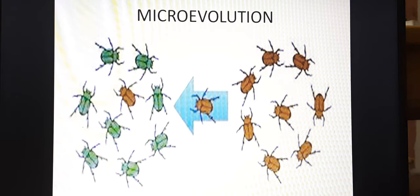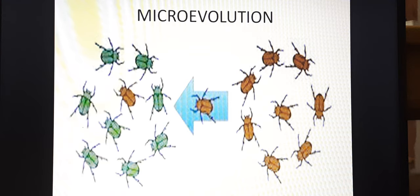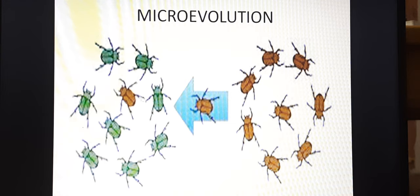Next is microevolution. Microevolution is the formation of new variants due to gene mutation and gene recombination. For example, pesticide-resistant or high-temperature-resistant varieties. Here, when pesticides are applied, all have died except one resistant variety that survived. Ultimately this one survivor will form a particular group which is totally pesticide-resistant. So this is called microevolution.